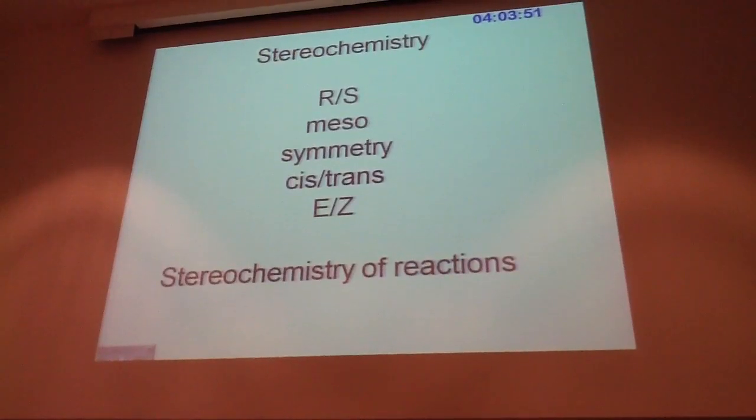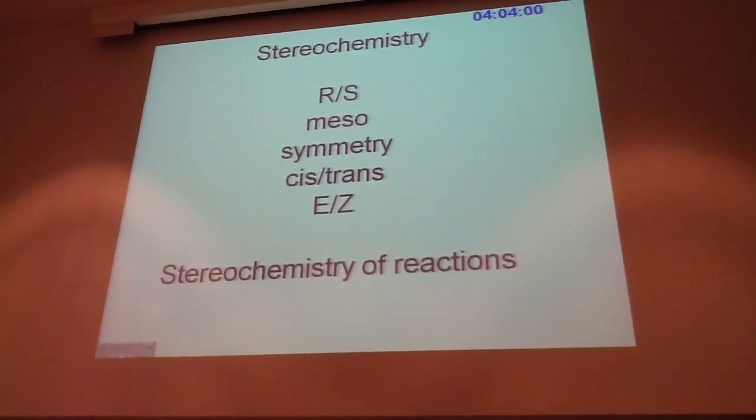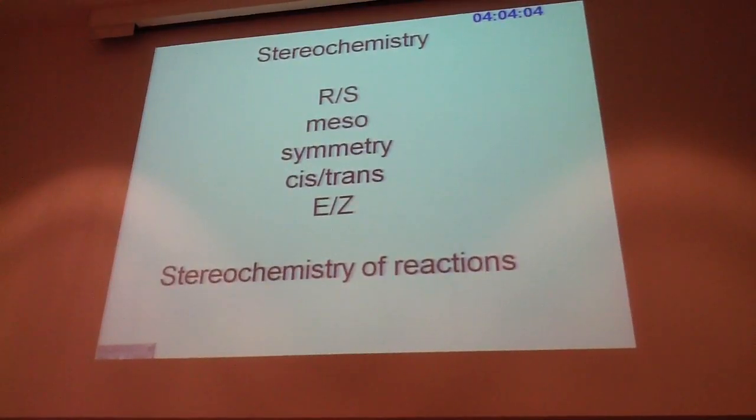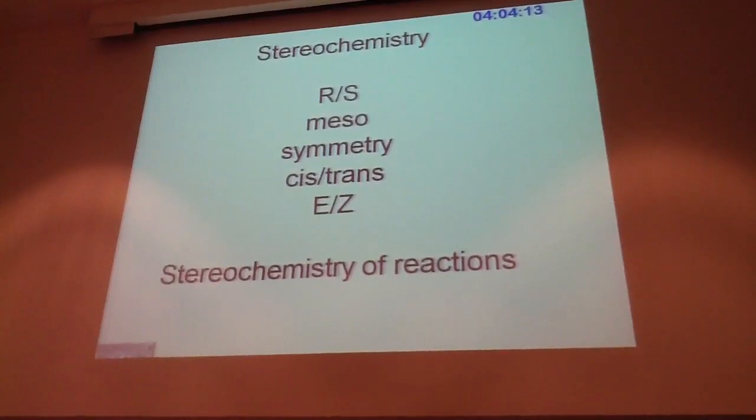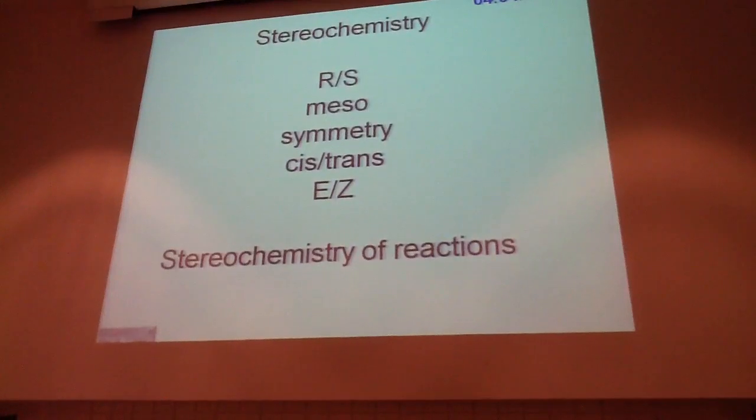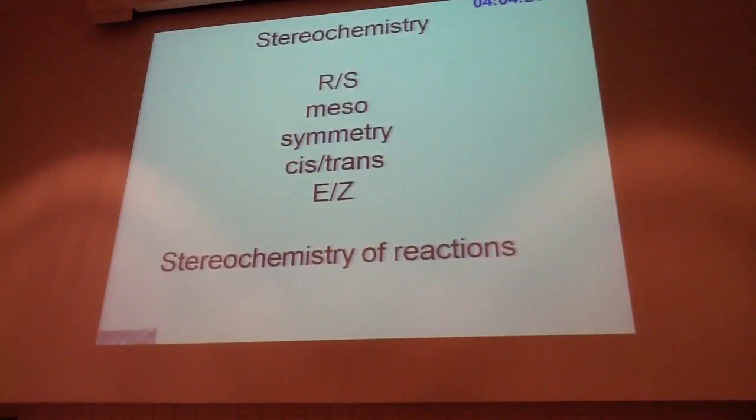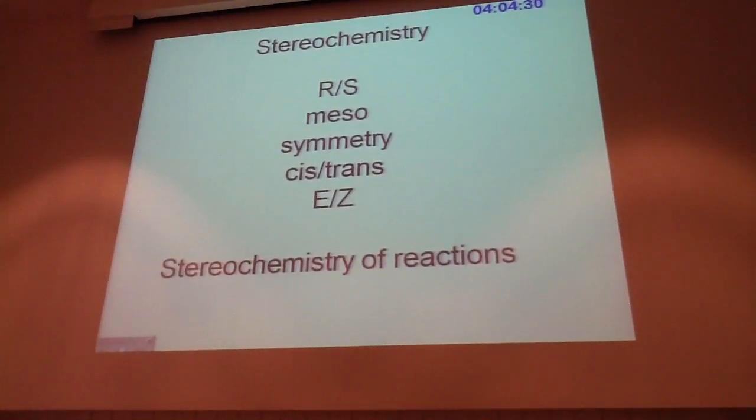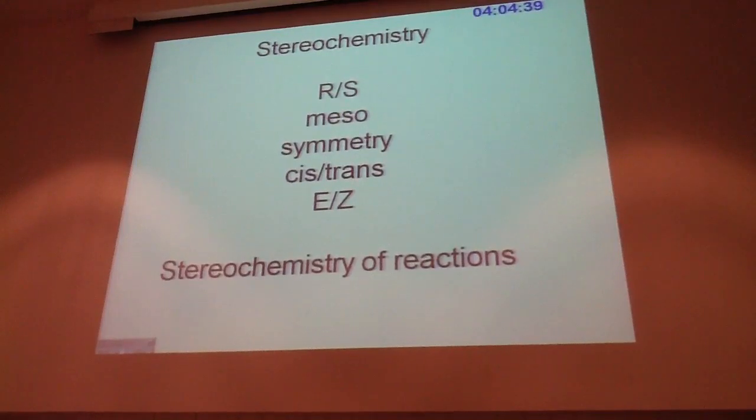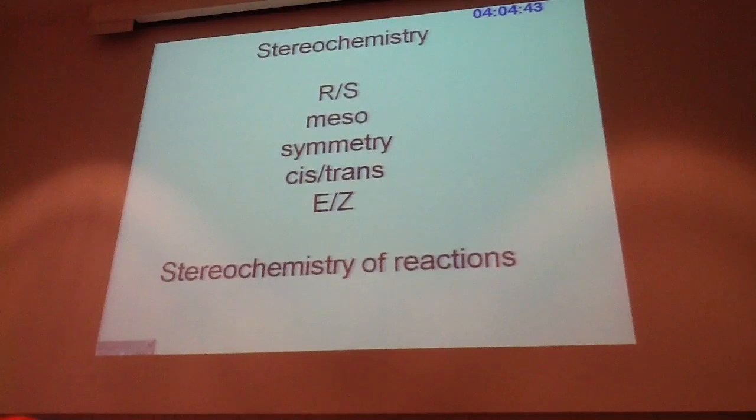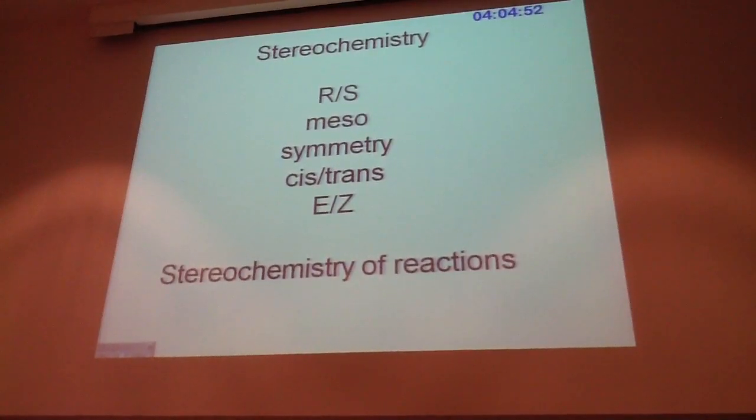Other stuff you need to know for the exam is stereochemistry. So be able to determine RS, understand what it means to have meso compounds, why that occurs. This is closely related to symmetry, asymmetry in molecules. Find as many different ways of representing structures so that it helps you to best identify when you have a difference in two structures or identical structures or enantiomers.